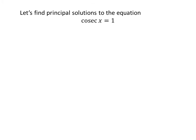Let us first find the principal solutions to the equation cosecant of x equals 1. We know the solutions to the trigonometric equation for which x is greater than or equal to 0 and less than 2π are the principal solutions.